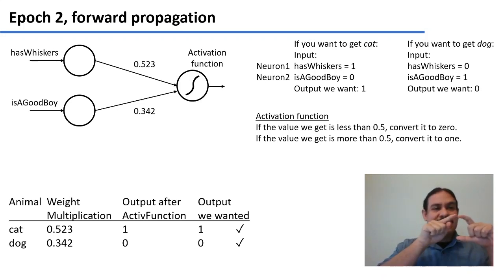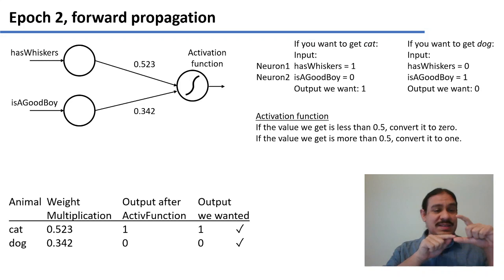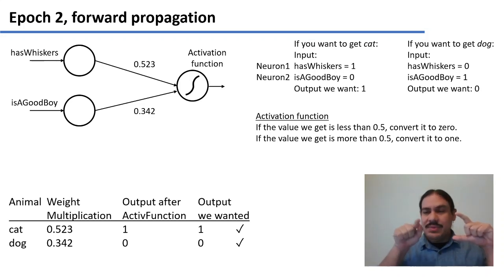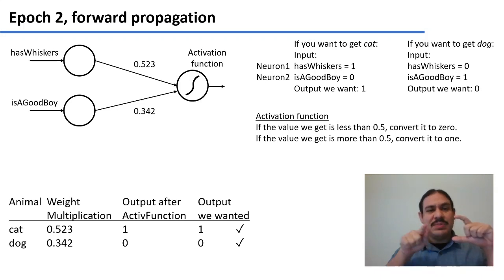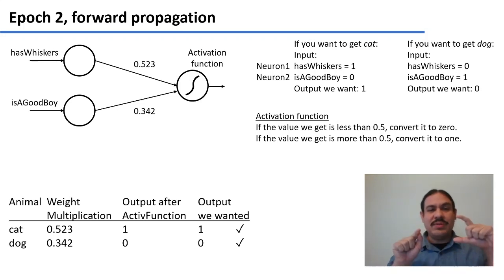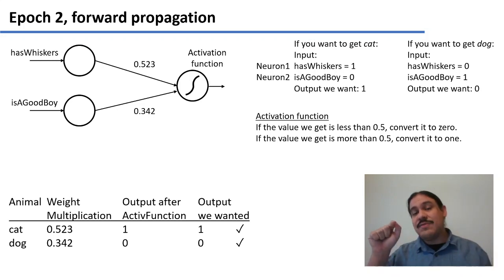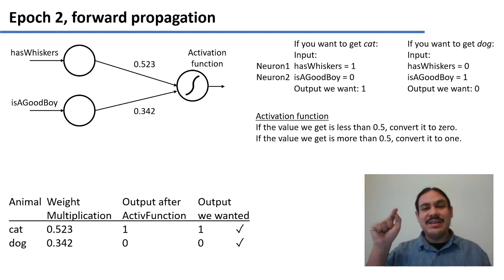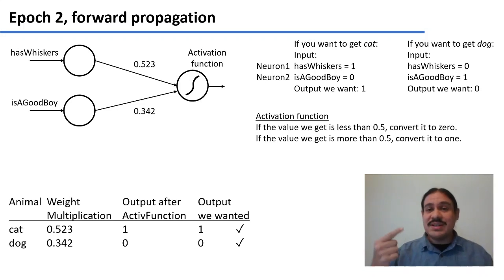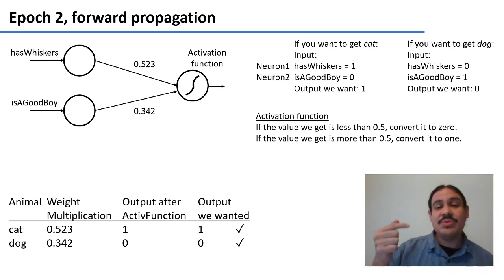The weight that connects the has-whiskers neuron to the output is 0.523, and the weight that connects is-a-good-boy to the output is 0.342. You add up the results of these multiplications. For cat, it's 1 multiplied by 0.523 plus 0 multiplied by 0.342, giving 0.523. You pass it through an activation function which rounds to the nearest integer, giving a 1 — the output we wanted. So the structure converts input one-zero to output one.